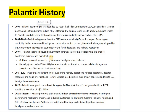Gotham was initially used mainly for US government security purposes. After 2010, they decided to move into the commercial field. Gotham is recommended for government, intelligence, and defense, while Palantir Foundry, launched around 2016-17, became the main platform for commercial data integration, analytics, and AI-powered decision making.